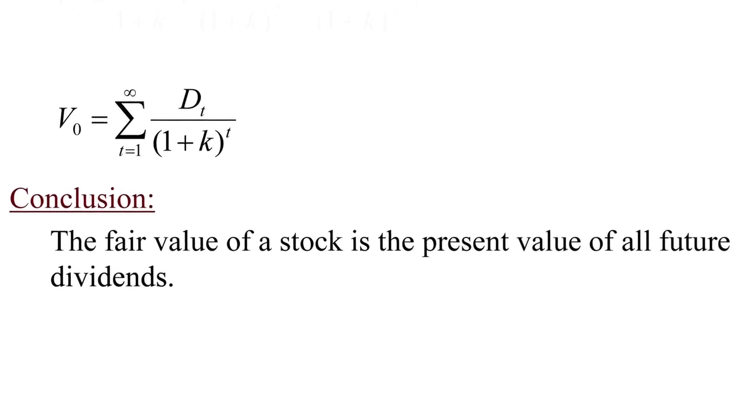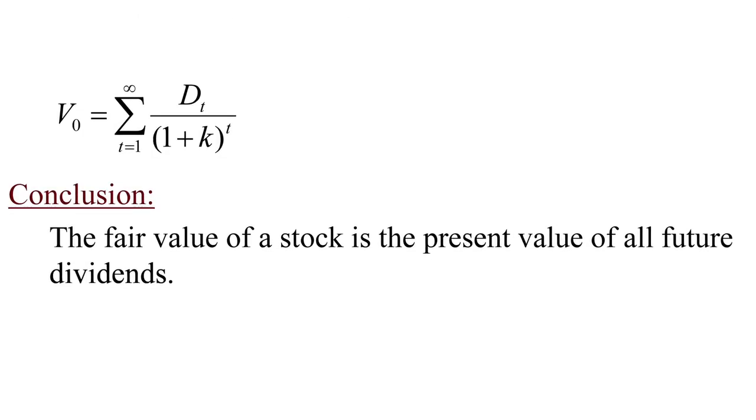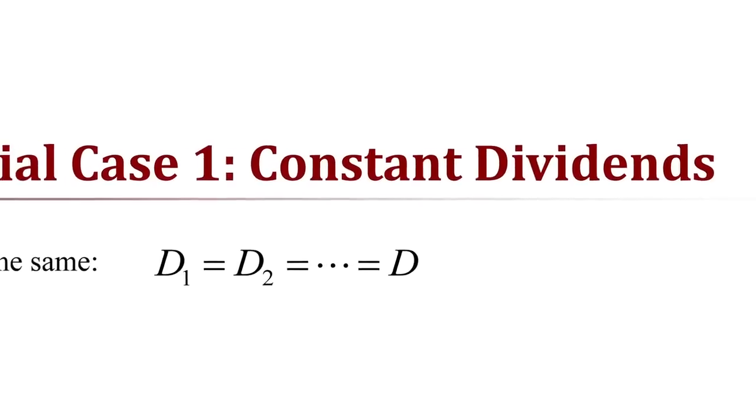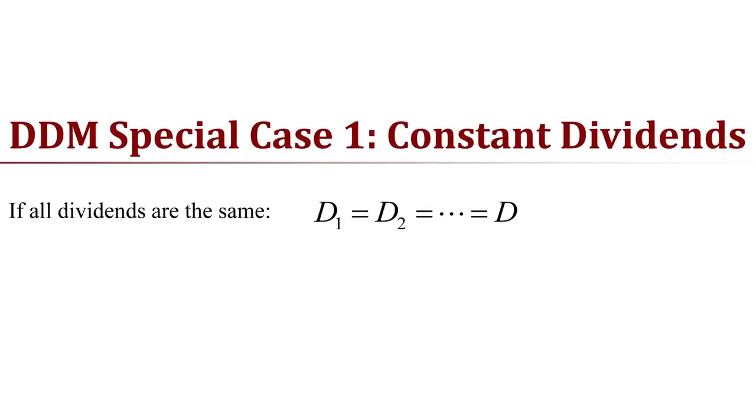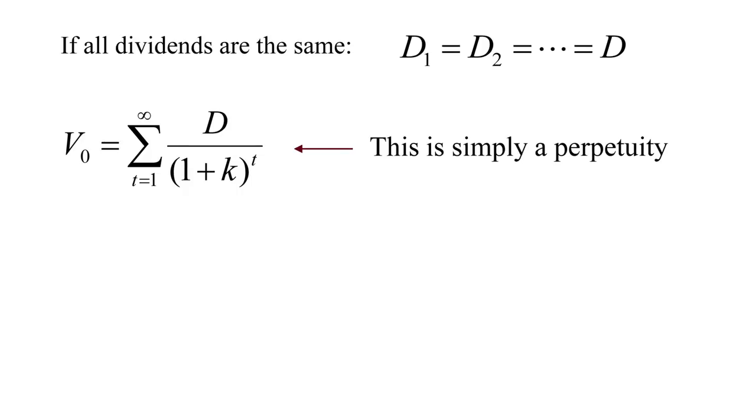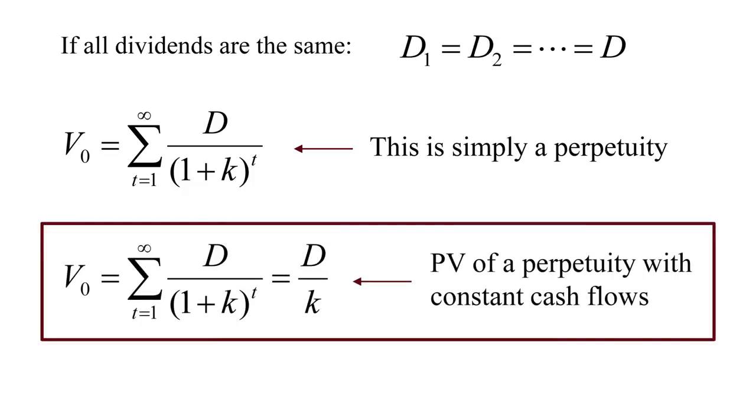Now how do we simplify this further? Because of course that infinite sum has an infinite number of terms in it. And here what we do is we make some simplifying assumptions about what those dividends will be. The most simple assumption that we can make is that all dividends are the same. D1 equals D2 equals some constant dividend D. Now when we substitute that into that infinite sum, we recognize that this is just a perpetuity that pays D dollars per year. And the present value of a perpetuity formula is actually very simple. It's just that cash flow D divided by the discount rate K.